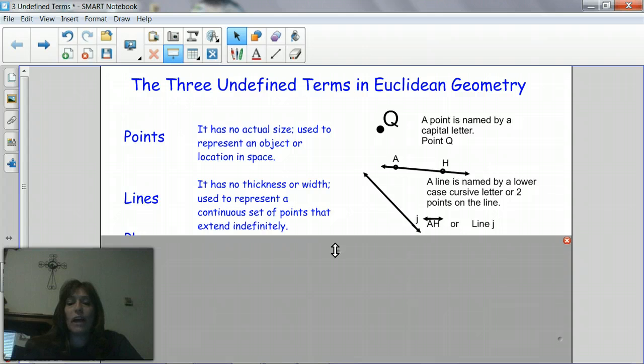Now on your last flap where your lined paper is again is our example and it's going to give line AH or line J. Line AH is actually named by two uppercase letters just like it's supposed to be and line J doesn't have a point on it but it's supposed to be a lowercase cursive letter. So make sure whenever you're doing yours you make it a cursive letter.